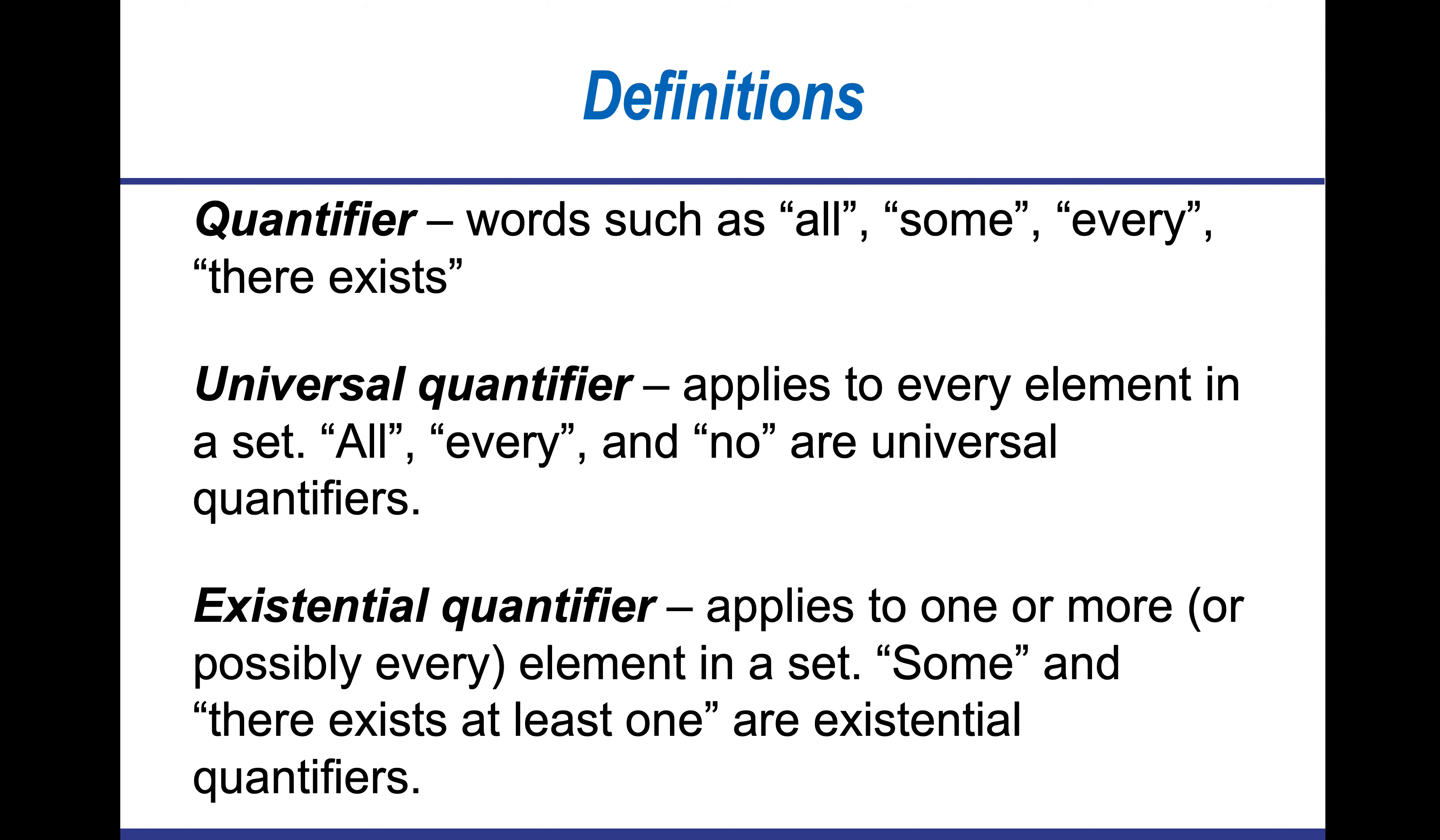A quantifier would be words that quantify an amount: all, some, every. A universal quantifier would be all, every, none. Existential quantifiers are going to be one or possibly every element in a set, so some, at least one, various, where it's not all, it's not none, but it's somewhere in between that spectrum.